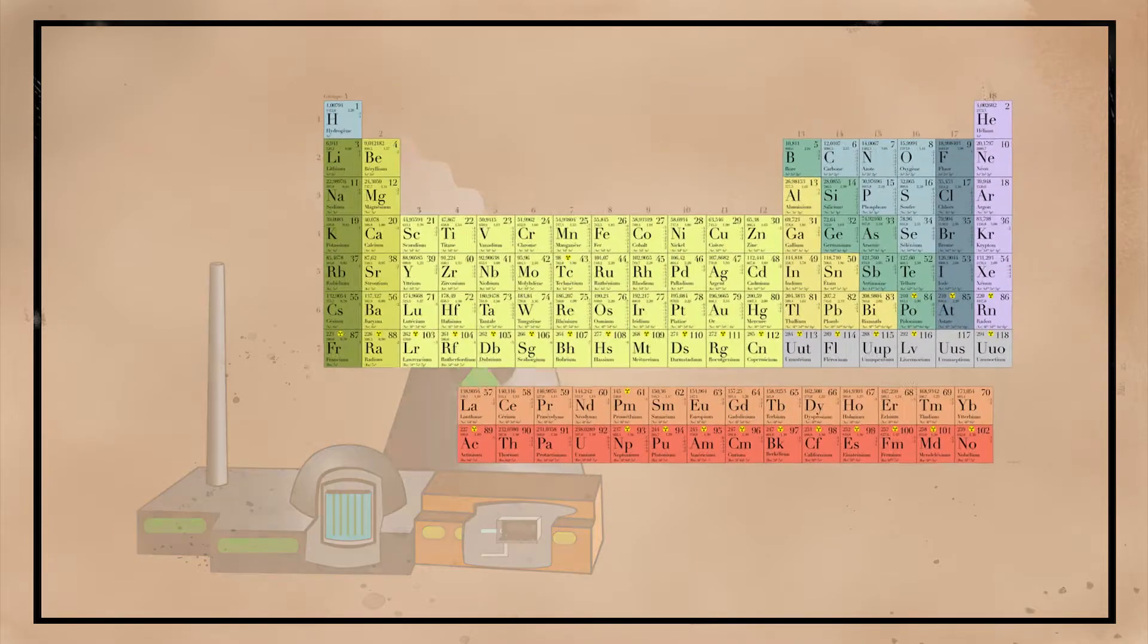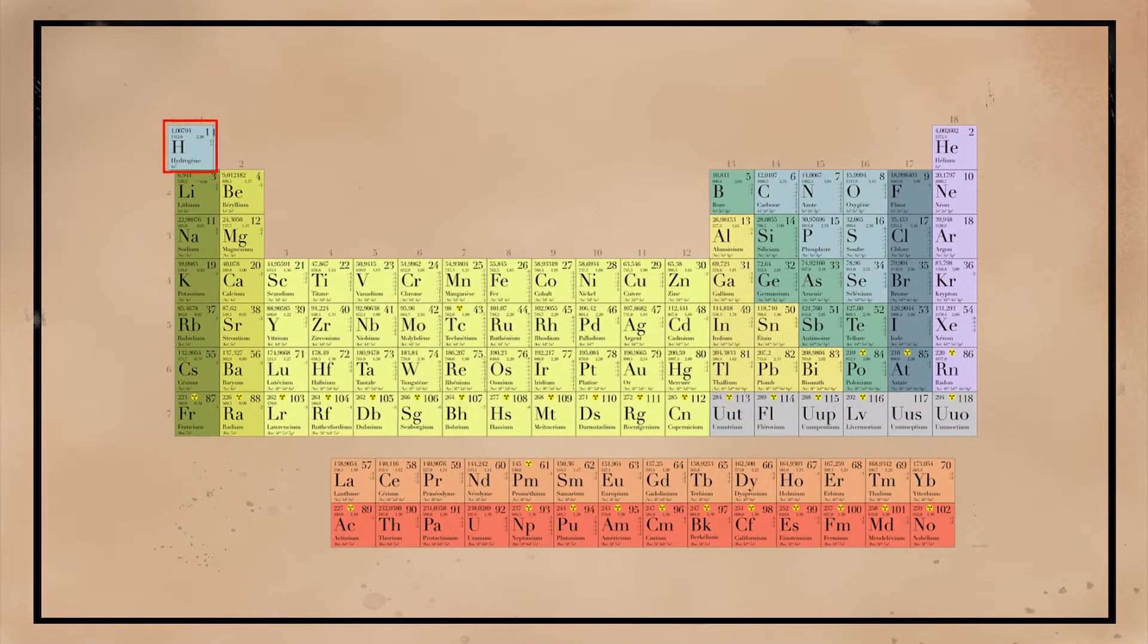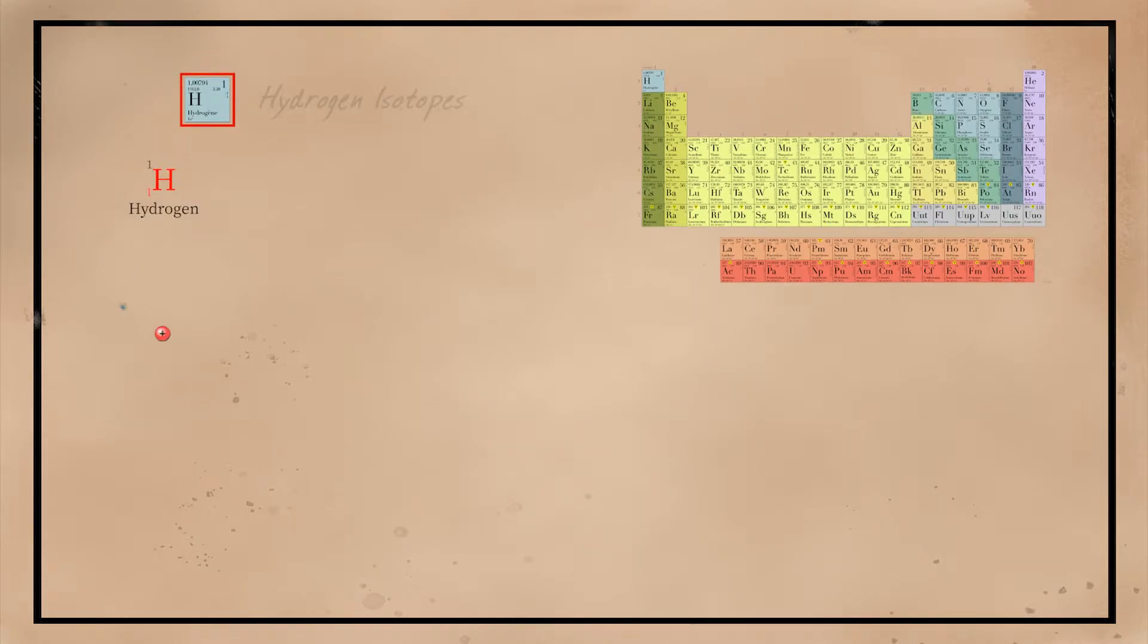Now nuclear fusion is the opposite process, where light elements get fused or combined together into a heavier element. The proposed fuel for a fusion reactor are two hydrogen isotopes, deuterium and tritium, which are fused into helium.